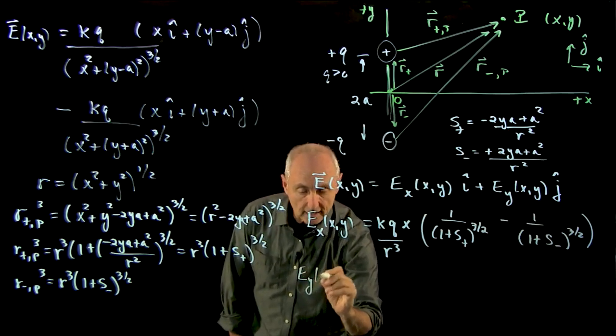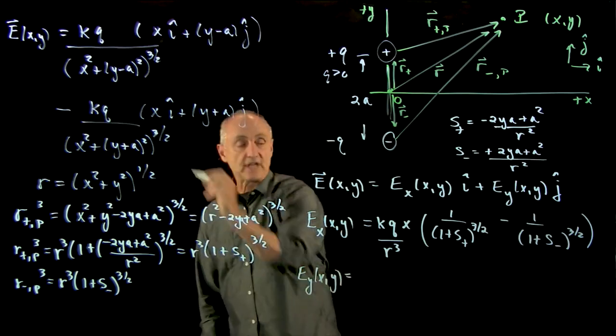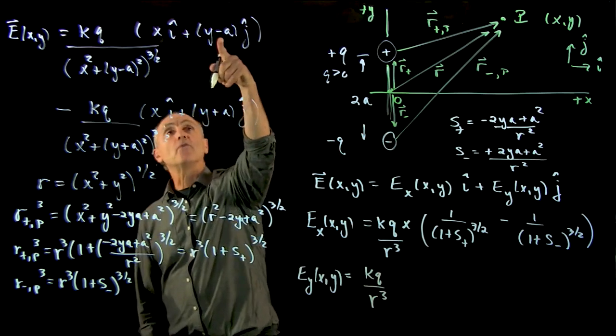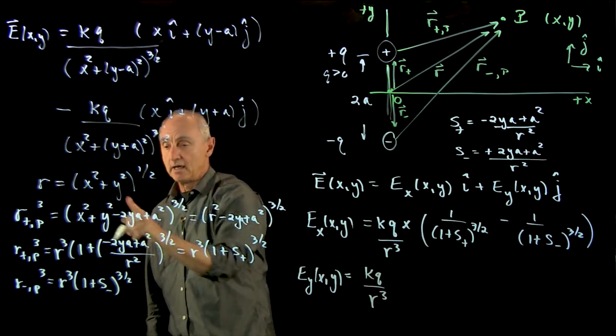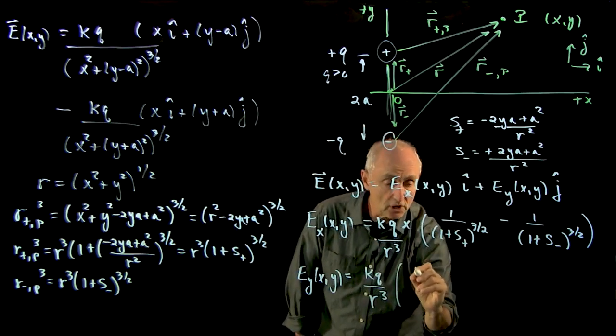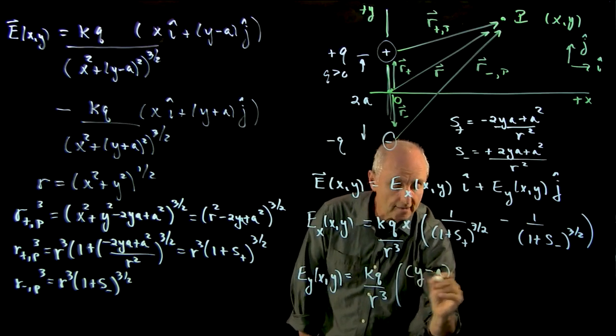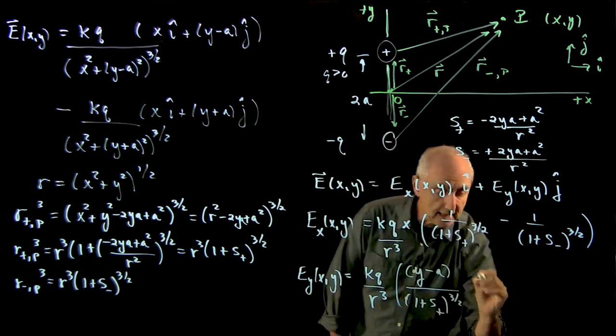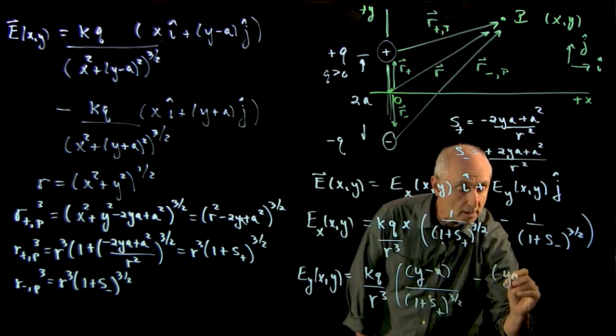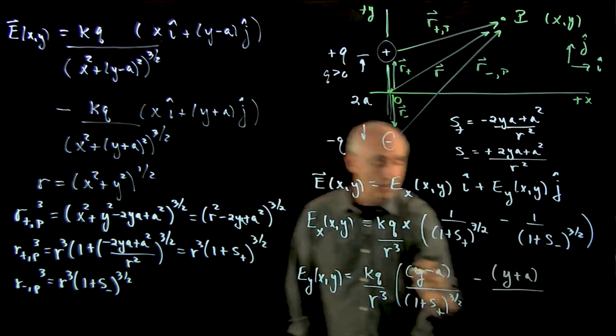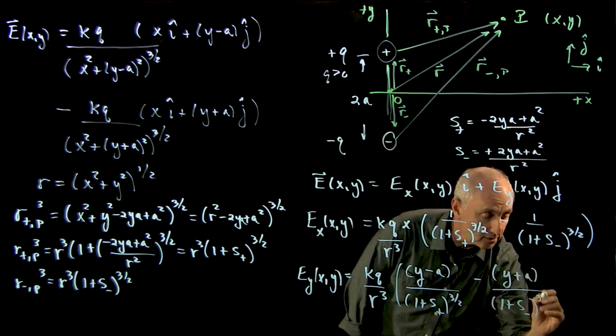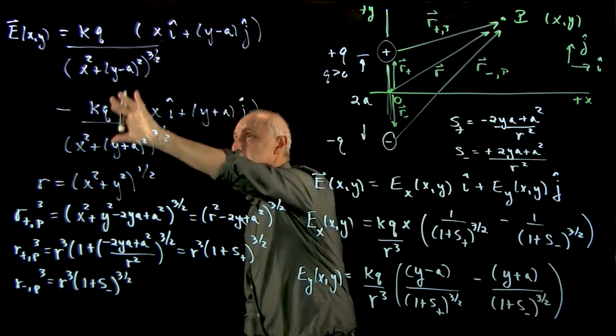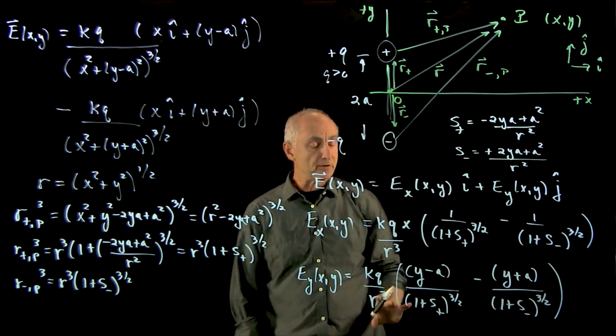Now, the y component is very similar. We have the same k cubed over r cubed. What we have here, notice we have a y minus a minus y plus a. And the denominators will be similar to those expressions. So we have y minus a over 1 plus s_plus to the 3 halves. Negative, because the other charge is negative. y plus a over 1 plus s_minus to the 3 halves. And this is, again, another way of rewriting this expression for the electric field in terms of its two component functions.